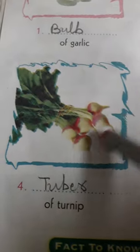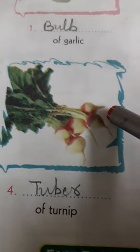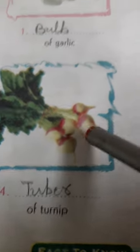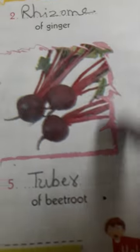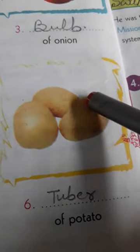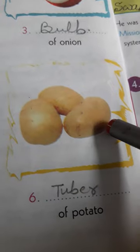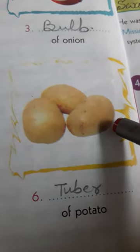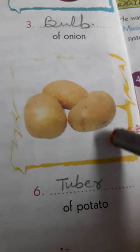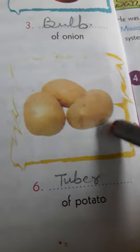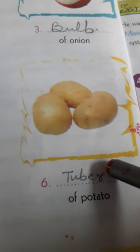Tuber of turnip — that is Shalgam. Tuber of beetroot — that is Chukandar. Tuber of potato — that is Alu. In Hindi it is known as Alu.